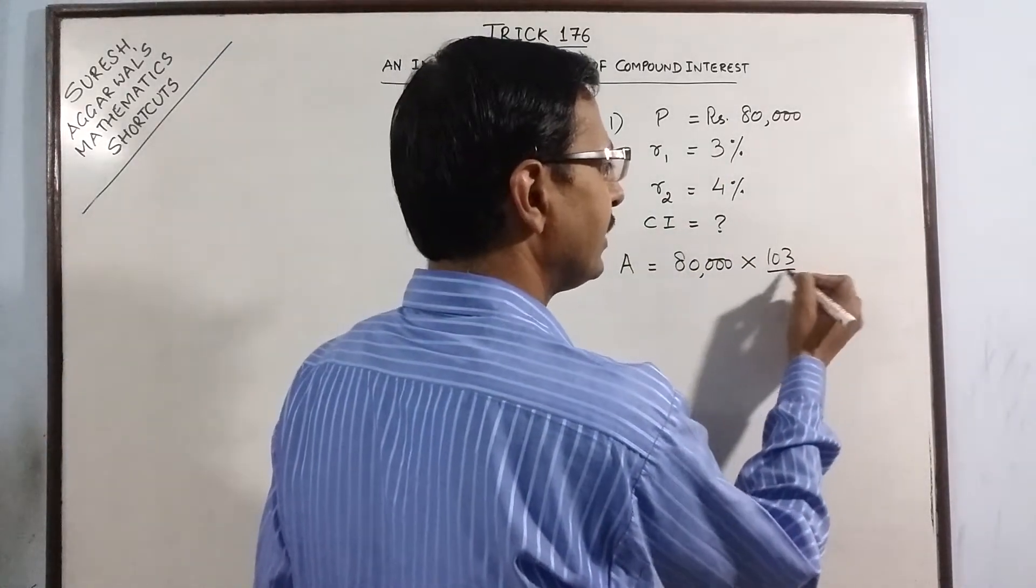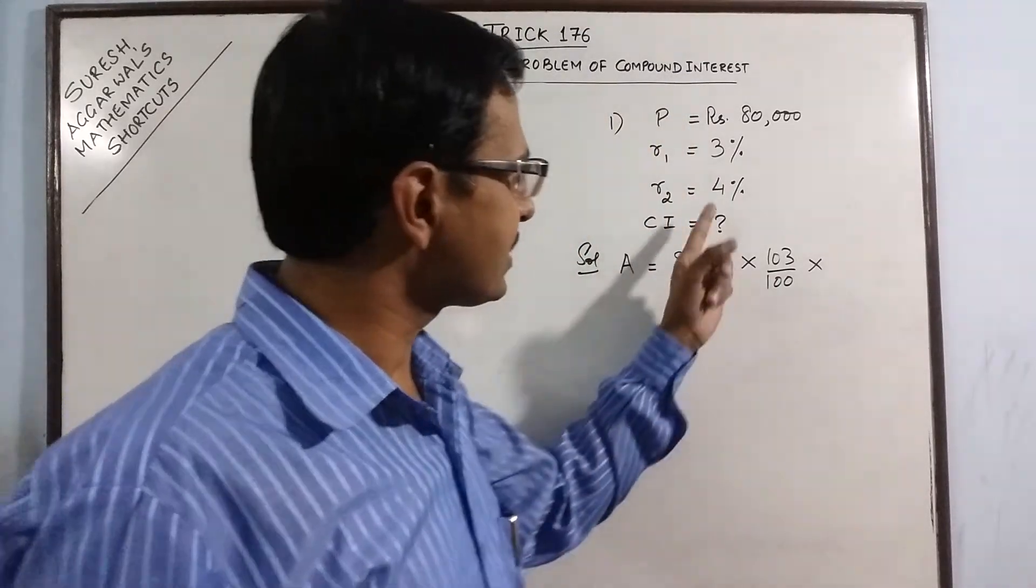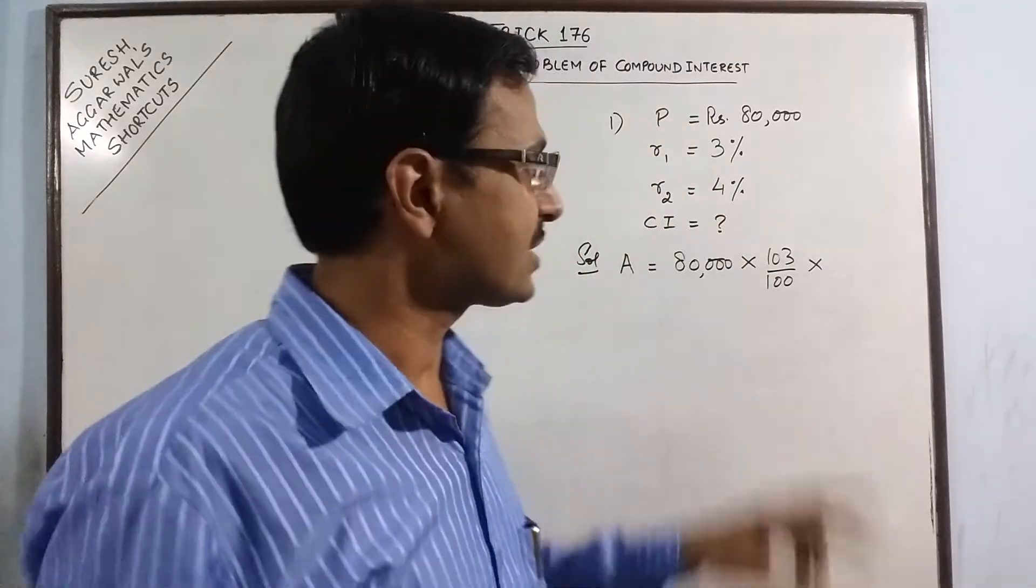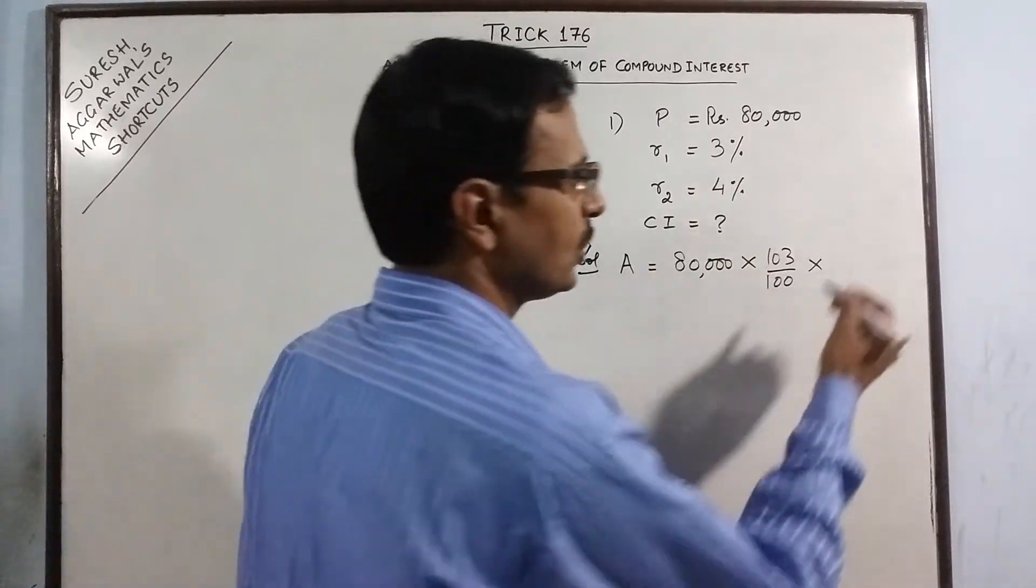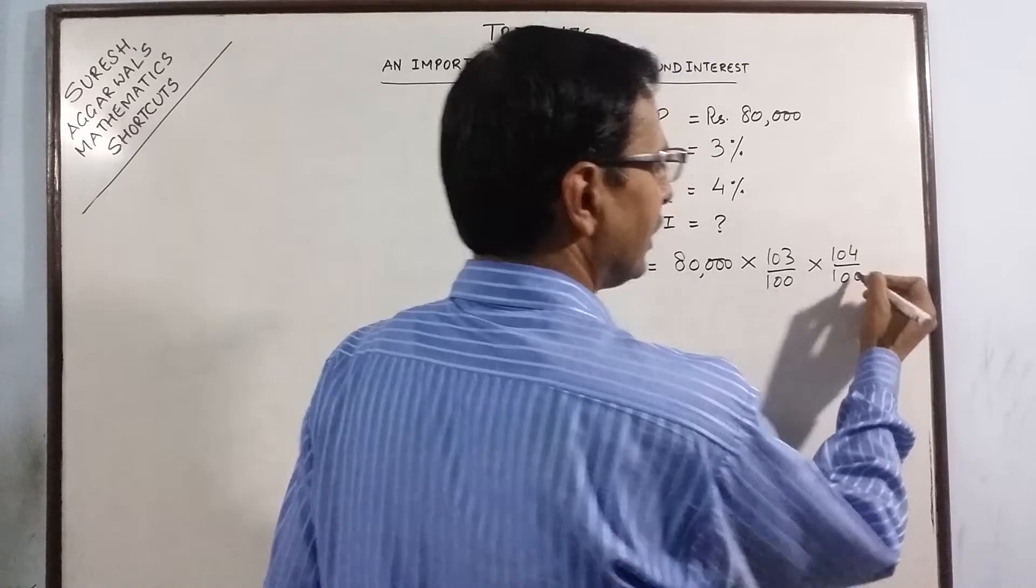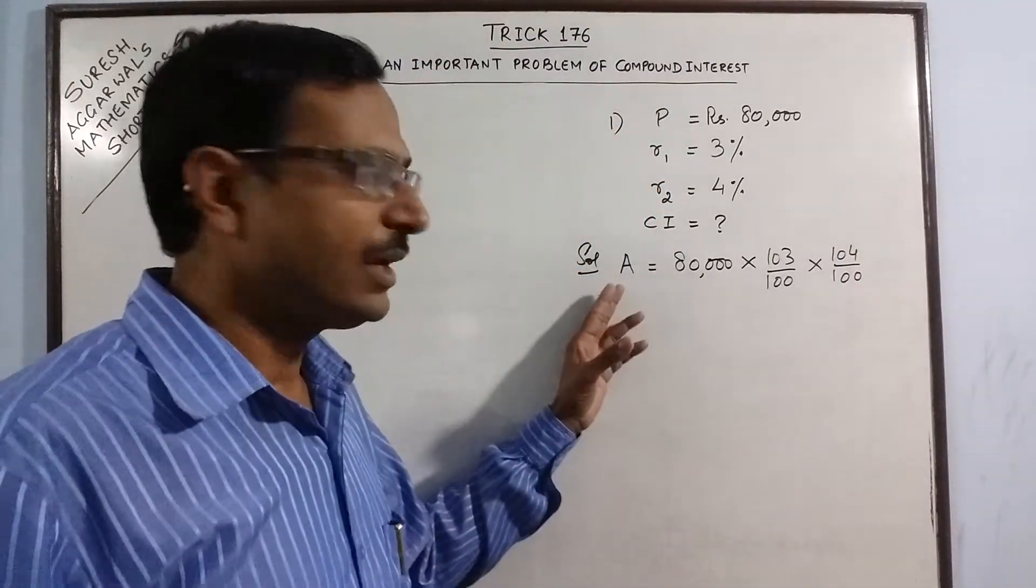So 103 upon 100 and for the second year the rate of interest is 4%. So just add 100 with 4 you get 104. So 104 upon 100 and this is the single calculation you have to do for calculating the amount.